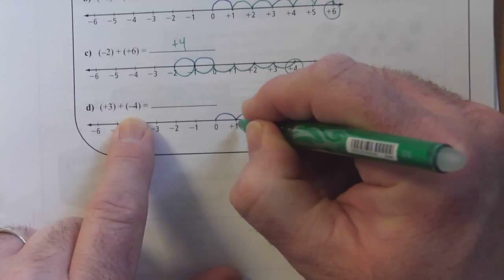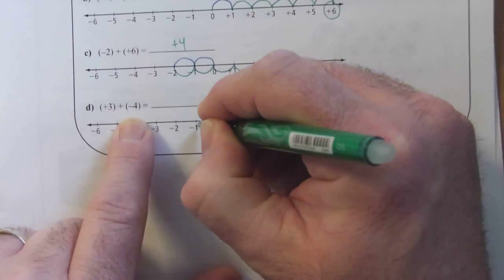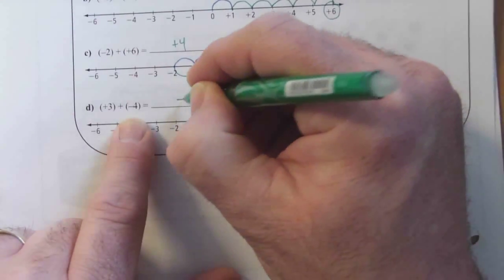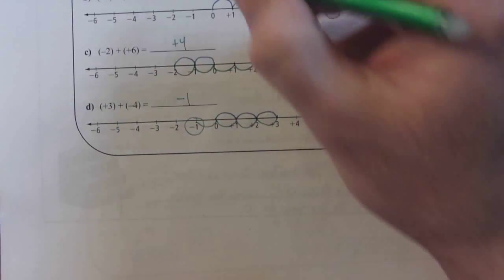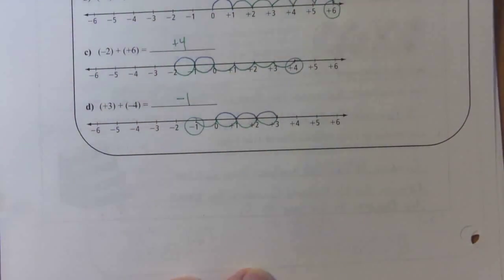And it's four leaps. One, two, three, four. Negative one is my answer. Those are your answers for the show you know.